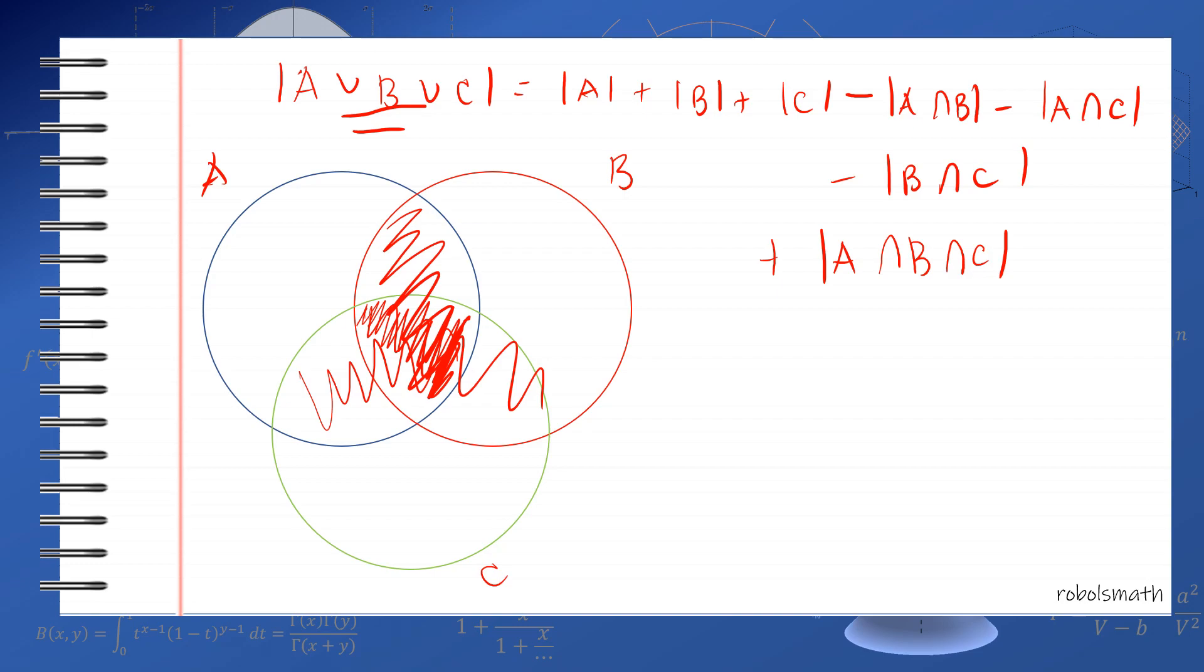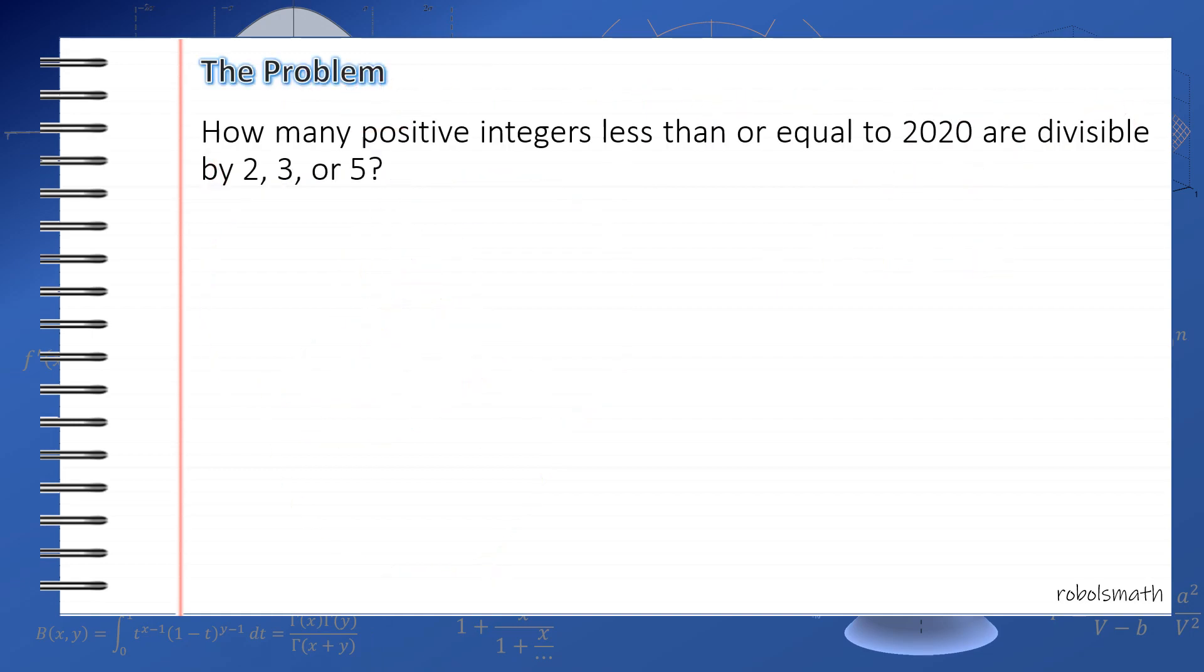For the final part of this video, we'll solve the problem from the start. Again, the technique is to find the number of elements in A, B, and C, then their intersections. Let's say this set is A, this is B, this is C: the multiples of 2, multiples of 3, and multiples of 5.